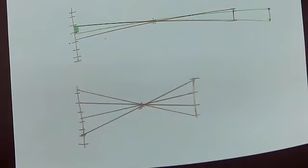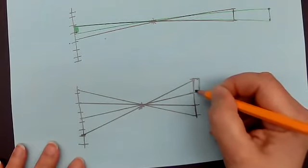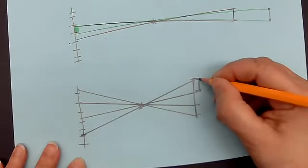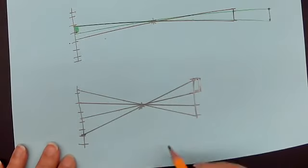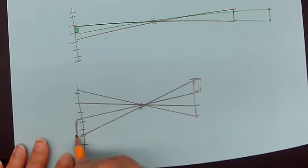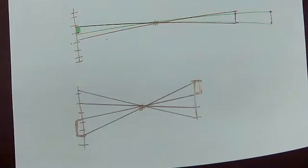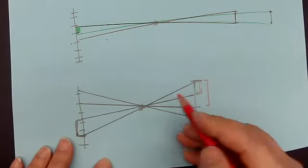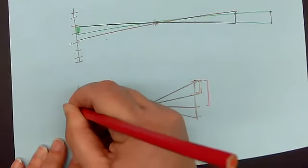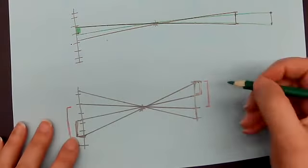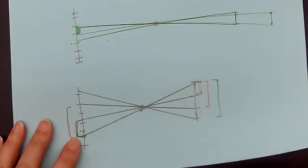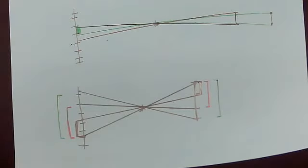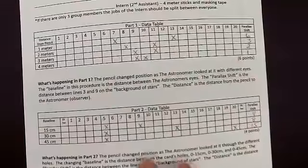They looked through the fourth hole and saw it here. They then compared the parallax shift at different baselines. The parallax shift at the first baseline is here, and when they increased the baseline the parallax shift also increased. When they increased the baseline again with that final hole, the parallax shift increased even more.